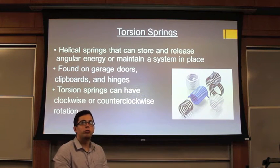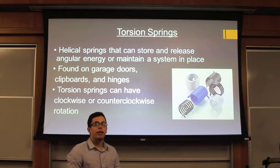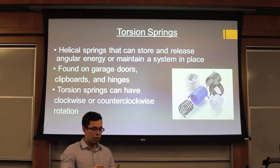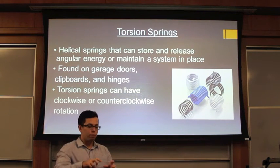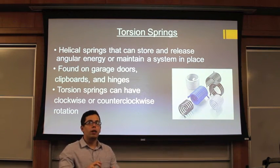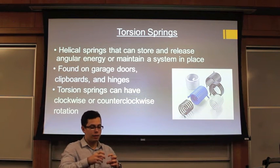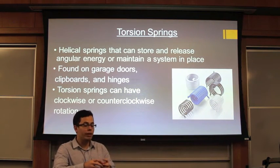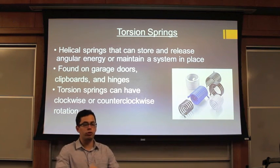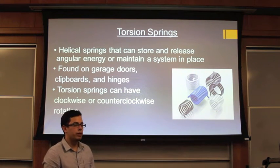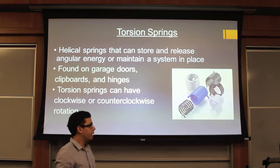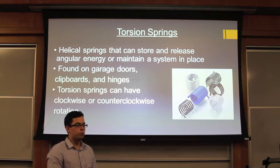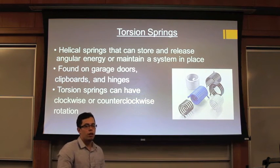Lastly, we're going to talk about torsional springs. This type of spring can store and release angular energy or maintain a system in place. A component applies a torsional force that will reduce the spring length, and at the same time the spring will create and release angular energy in order to push the components back. This type of spring can be found on garage doors, clipboards, and hinges. Depending on the application, these springs can have clockwise or counter-clockwise rotation.